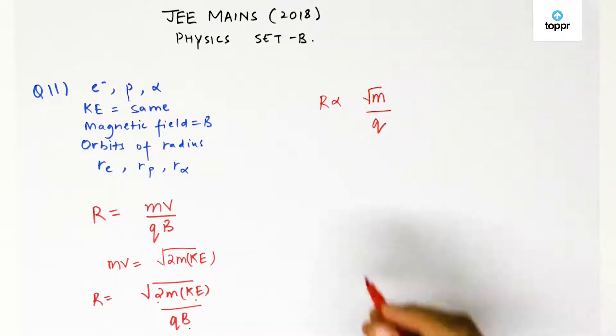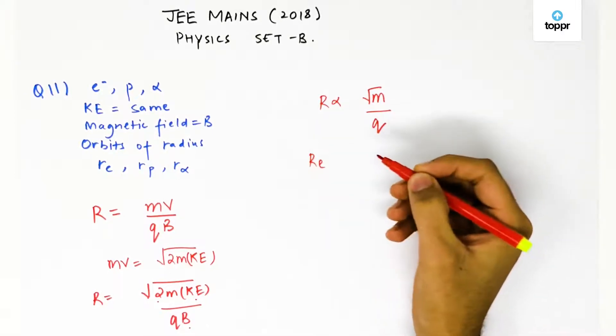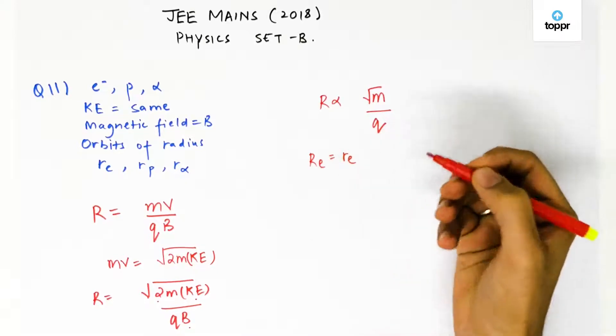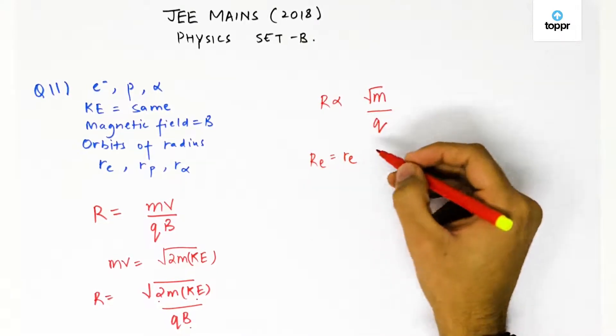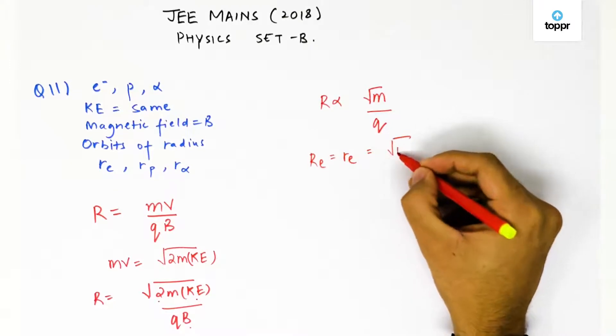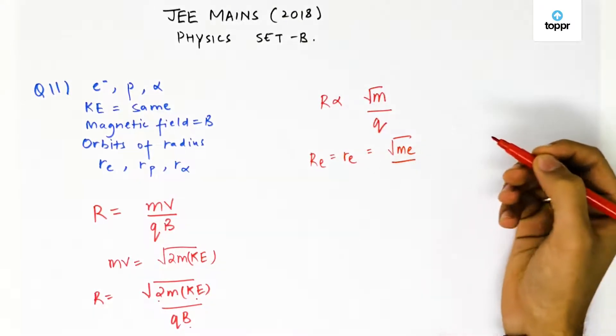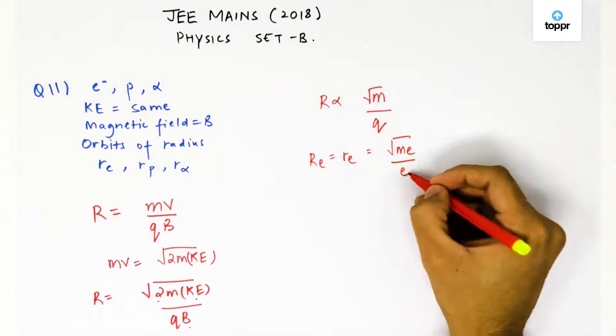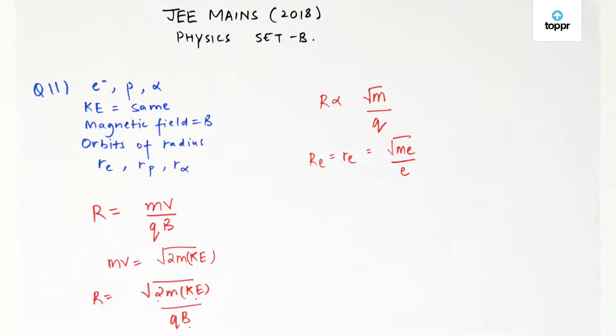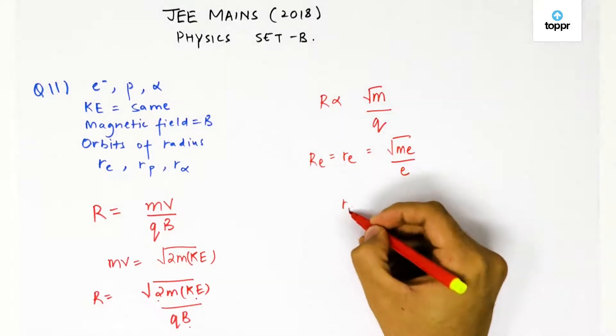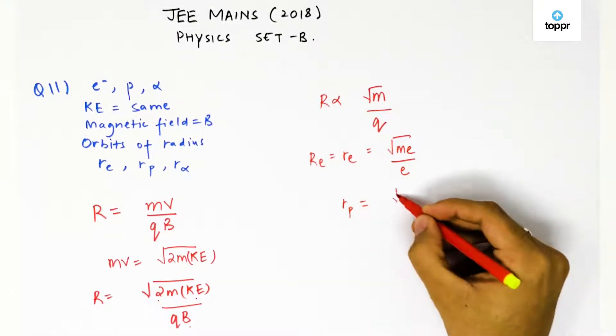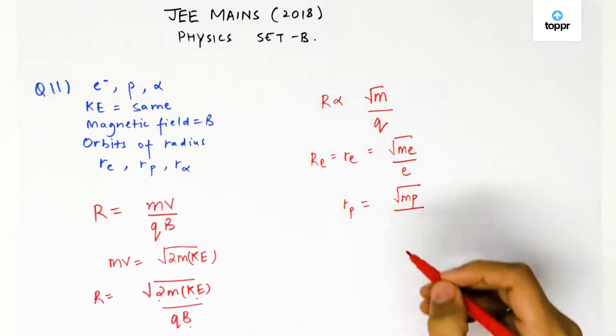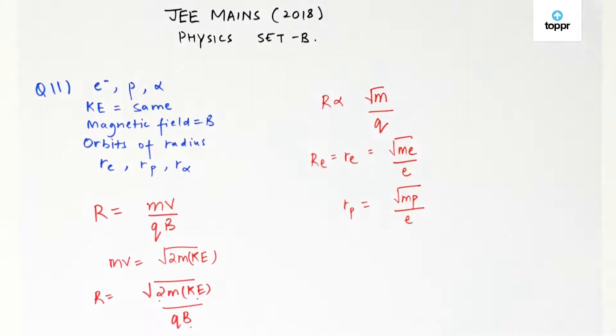Now, radius of the electron or here it is small re would be dependent upon mass of the electron upon q, the charge of the electron. We write the charge of the electron as e. Similarly, for radius of the proton would be equal to mass of the proton and charge of the proton. Charge of the proton is again e.